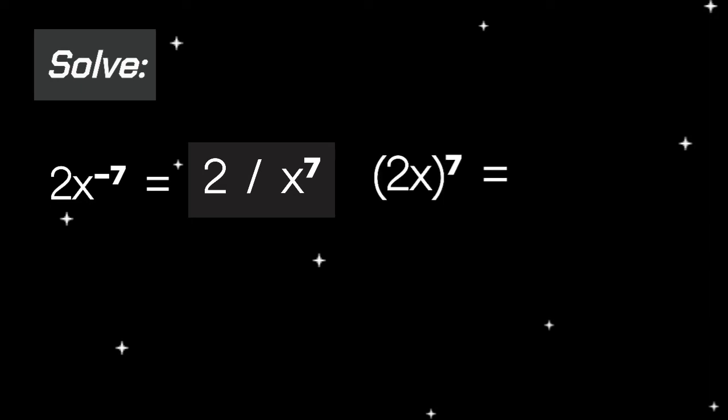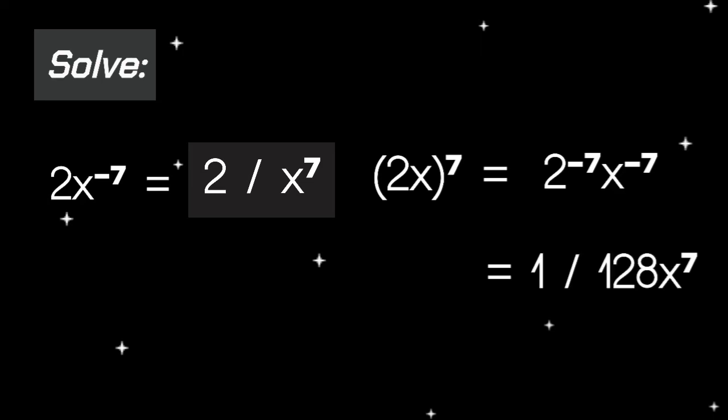Next, the quantity of 2x raised to the power of negative 7. You distribute the exponent to both terms of the parenthesis, giving 2 raised to the power of negative 7 and x raised to the power of negative 7. That equals 1 over 2 to the 7th and x to the 7th, or 1 over 128x raised to the power of 7.